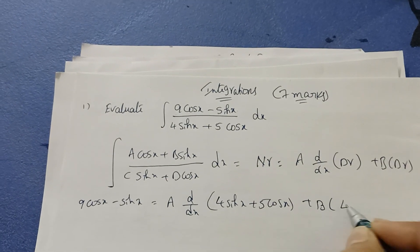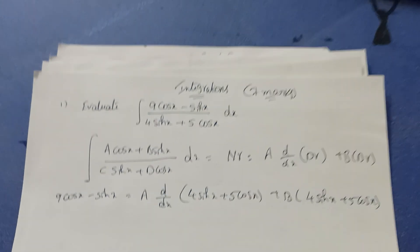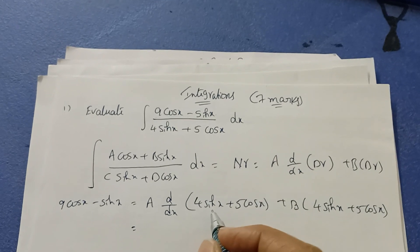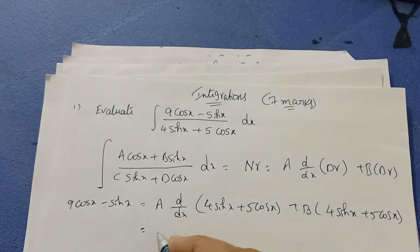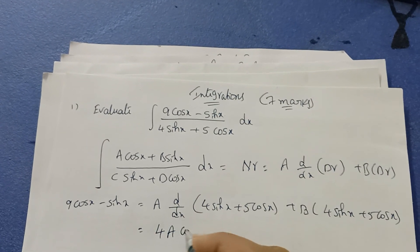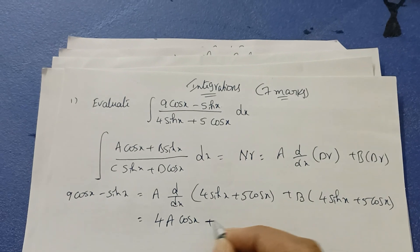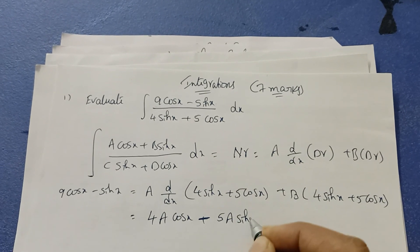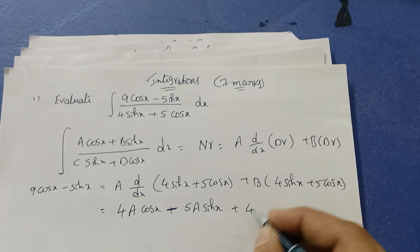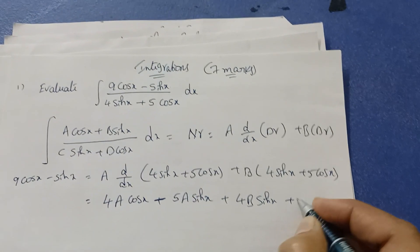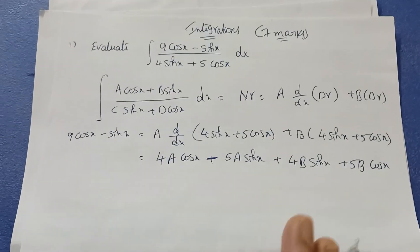Plus b times the denominator, which is the same: 4·sinx + 5·cosx. Now take d/dx of the denominator — derivative of 4·sinx is 4a·cosx, and derivative of 5·cosx is minus 5a·sinx. Plus the b terms: 4b·sinx plus 5b·cosx.